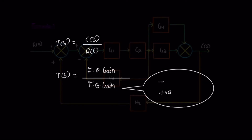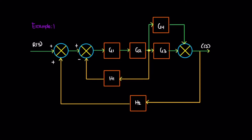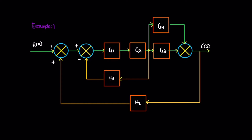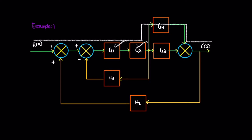Now let's move to Example 1. In this example, the number of forward paths is 2 and the number of feedbacks is 3. The first forward path is just a straight line, and the forward path gain is the product of the block values in the same path. So for this path, the gain is equal to G1 × G2 × G3. The next path moves through another route, so that path gain is the product of G1 × G2 × G4. So the two forward paths are over.